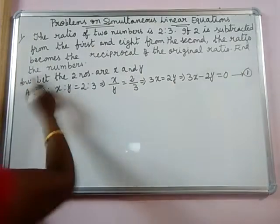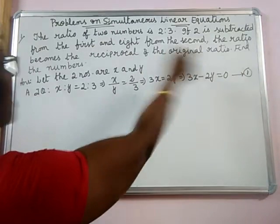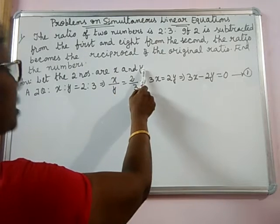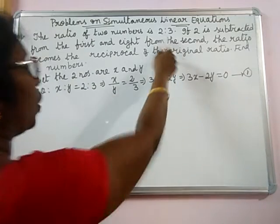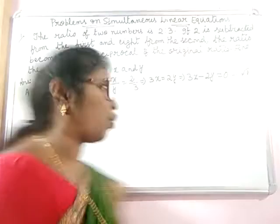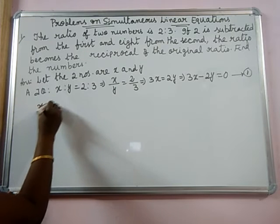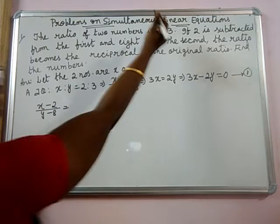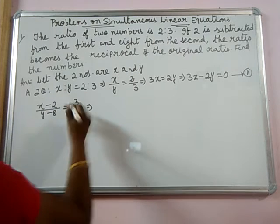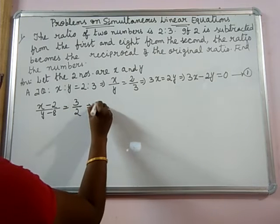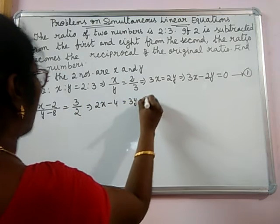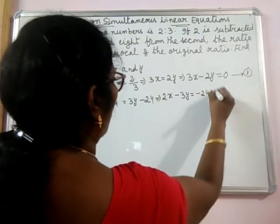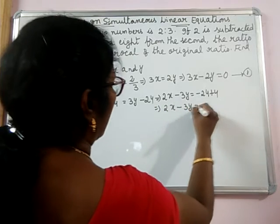Now see how I frame the equation from what is given. If 2 is subtracted from the first number, we get x minus 2. And 8 from the second, y minus 8. The ratio becomes the reciprocal of the original ratio. Reciprocal means 2 to 3 will become 3 to 2. So, x minus 2 over y minus 8 equals 3 by 2. Cross multiplying: 2x minus 4 equals 3y minus 24. That implies 2x minus 3y equals minus 20.